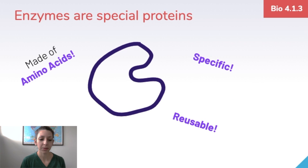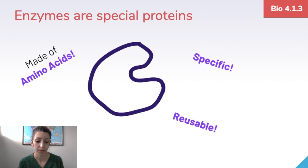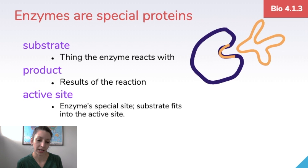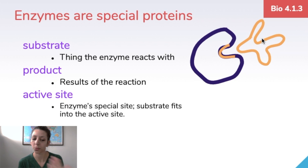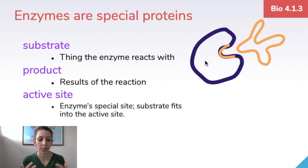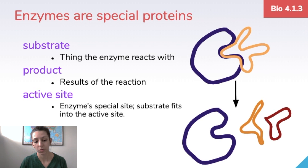Enzymes are special types of proteins made of amino acids, and they have a specific structure that allows them to perform their functions. Enzymes are also reusable — after a reaction, an enzyme remains unchanged. Key vocabulary: enzymes react with substrates (the yellow molecule in this picture), and the product is what results after the reaction. The active site is the enzyme's special site where the substrate fits in to make the reaction occur. After the reaction, the substrate is changed into products while the enzyme stays the same.